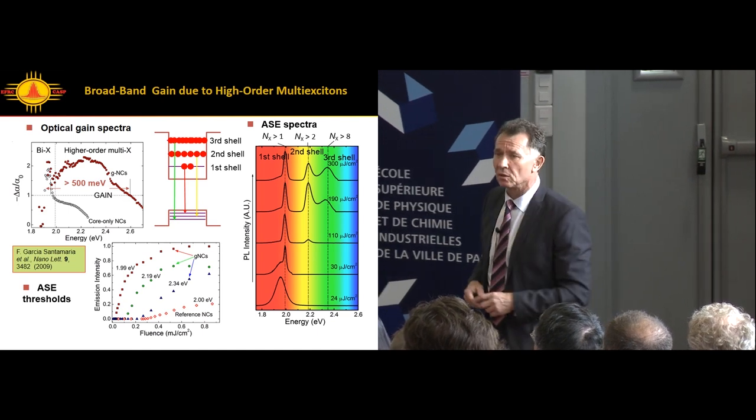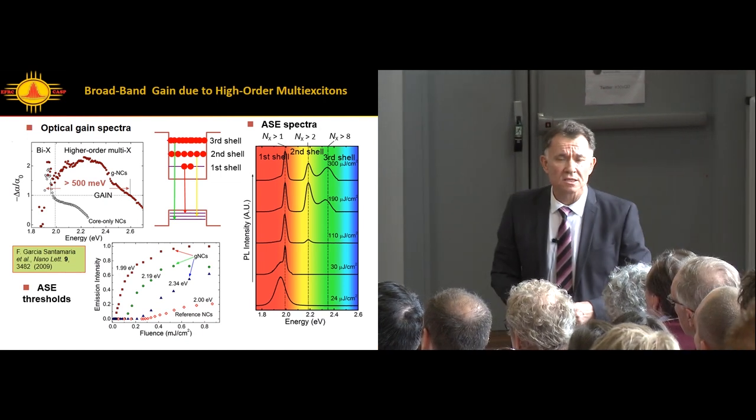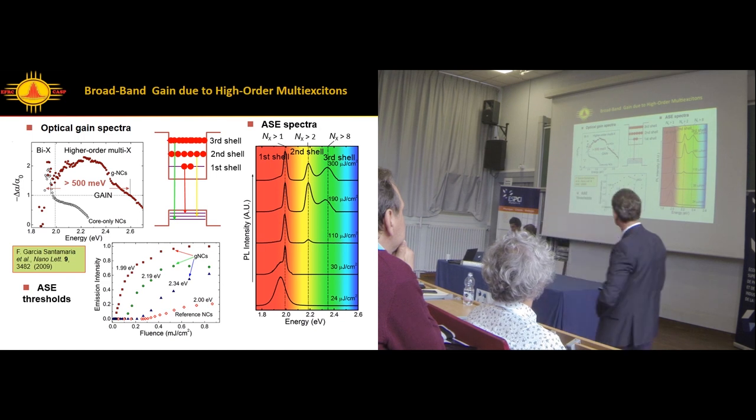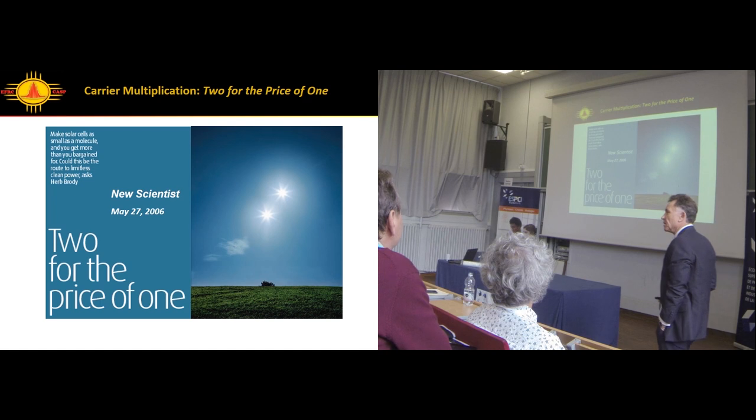The threshold was also extremely low, about 50 microjoules per square centimeter, while in standard dots it's about 5 millijoules per centimeter squared.